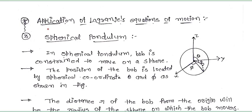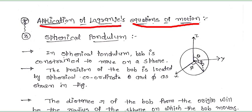In this chapter, we already discussed about Lagrangian's equation of motion in the previous lectures. In the last two lectures, we already discussed about applications of Lagrangian's equation of motion. We studied two applications: the first one is the one-dimensional simple harmonic oscillator and the second one is the simple pendulum. But in this lecture, we discuss about the third application of Lagrangian's equation of motion, that is the spherical pendulum.